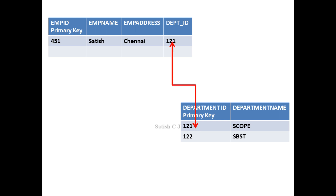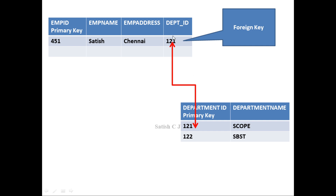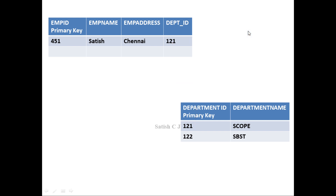So we call that a foreign key. A foreign key is a constraint that says whatever value you enter here should be unique in the department table's department ID column, and that value must be present in the department ID column — only then is such a record entry allowed. Say suppose you have established department ID as a foreign key and you try to insert a record for Ramesh with employee ID 452 and address Vellore.